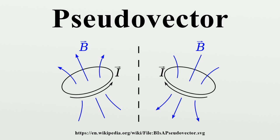The definition of a vector in physics is more specific than the mathematical definition of vector. Under the physics definition, a vector is required to have components that transform in a certain way under a proper rotation. In particular, if everything in the universe were rotated, the vector would rotate in exactly the same way. Mathematically, if everything in the universe undergoes a rotation described by a rotation matrix R, so that a displacement vector x is transformed to x' equals Rx, then any vector v must be similarly transformed to v' equals Rv. This important requirement is what distinguishes a vector from any other triplet of physical quantities. The discussion so far only relates to proper rotations, i.e., rotations about an axis.